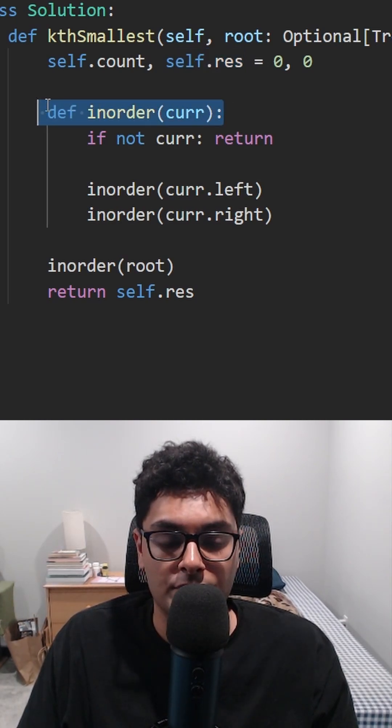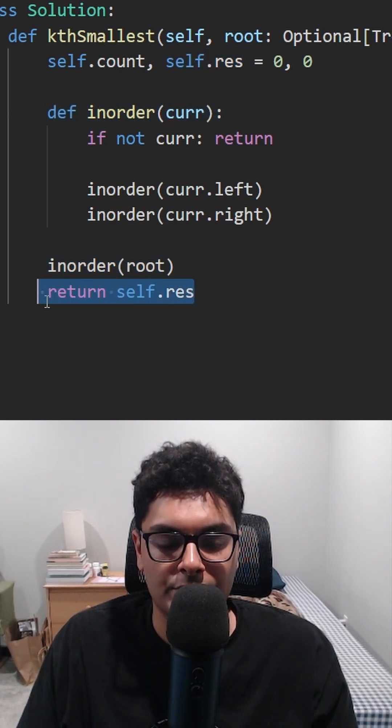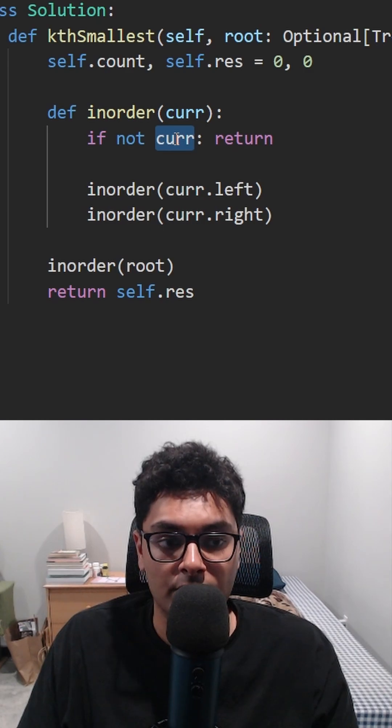I'm going to have my in-order traversal. I'm going to call it and then when I return, I'm going to return the result. We know that if we reach a null node, we should just return.